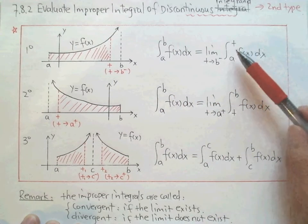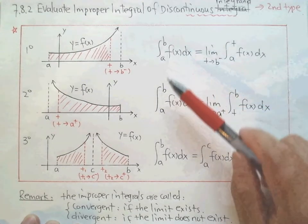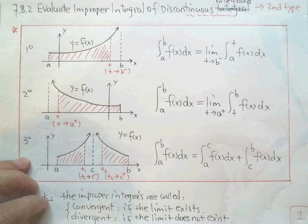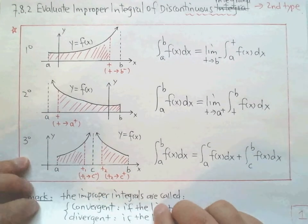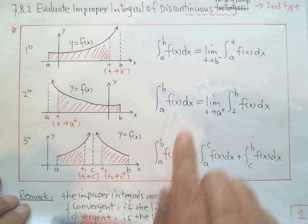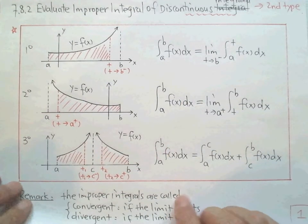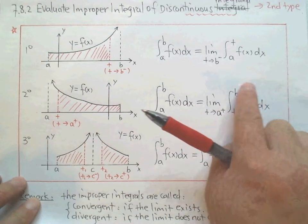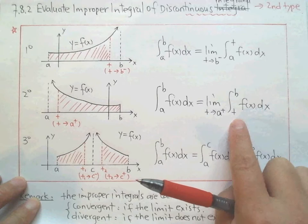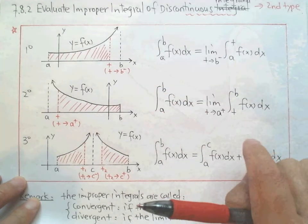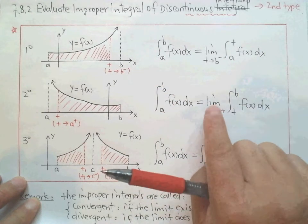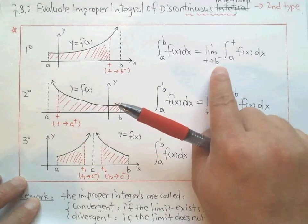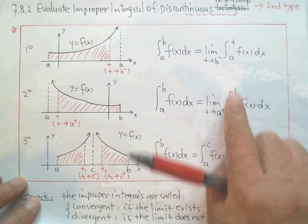If both limits exist, we call the improper integral convergent. I'll give you one example. There are two steps to the calculation. First step: find the definite integral from a to t or from t to b. Second step: take a limit — be careful, the limit is either a left-side limit or a right-side limit.